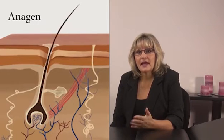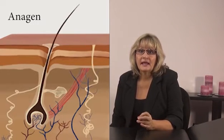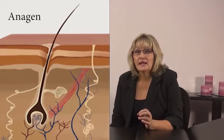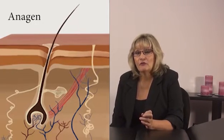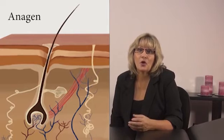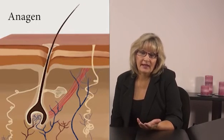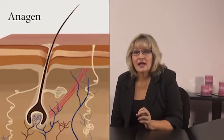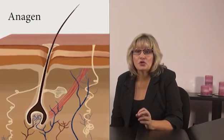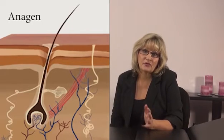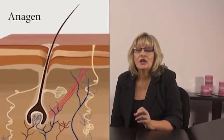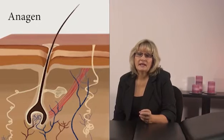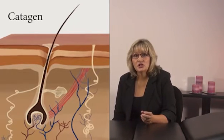Anagen is the growth or active phase. This is where the cells will divide rapidly and the new hair is formed — hair growth is most rapid in this stage. Scalp hair stays in this phase for around two to six years, which is why the hair on your head continues to grow. Eyelashes, eyebrows and most body hair have a very short growth phase of between 30 and about 60 days, which is why this hair stays shorter.